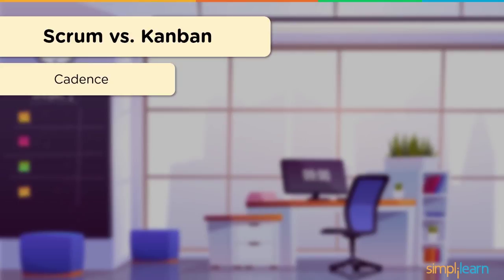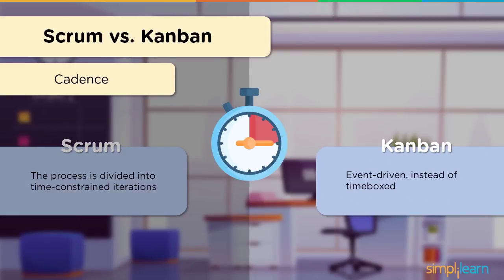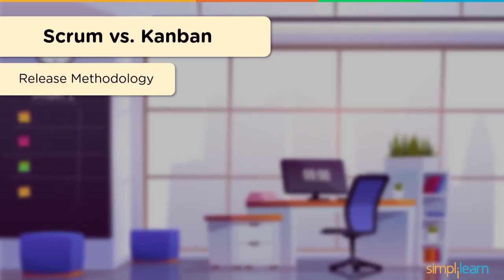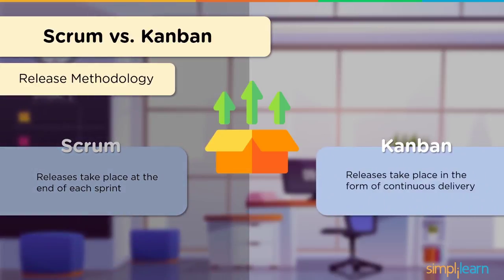Firstly, let's look at Cadence — the amount of time in a sprint or before a release. In Scrum, the entire project is divided into time-constrained iterations, that is, into smaller manageable units. In Kanban, it's event-driven. The next criterion is release methodology. In Scrum, releases take place after each sprint, which usually takes 2–4 weeks to complete. For Kanban, releases take place in the form of continuous delivery — changes like new features, configuration changes, bug fixes, and experiments reach users in a safe, quick, and sustainable manner.